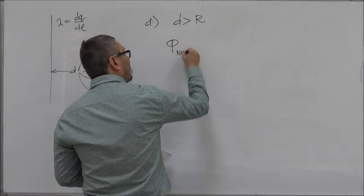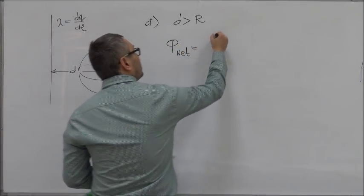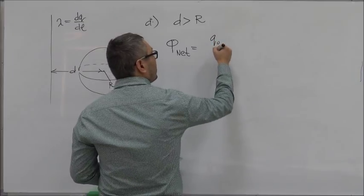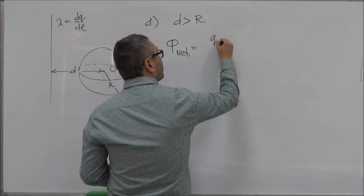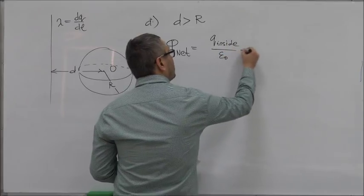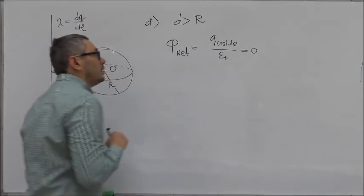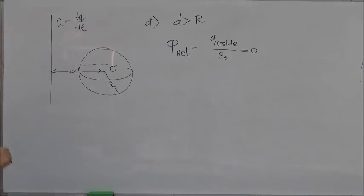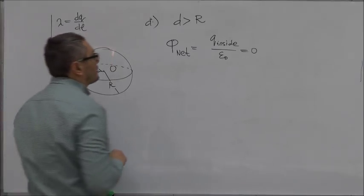Which means that the net electric flux through the sphere, according to Gauss's law, Q inside over epsilon zero is equal to zero. So when D is greater than R, there is no charge inside and therefore the net flux through the sphere is equal to zero.